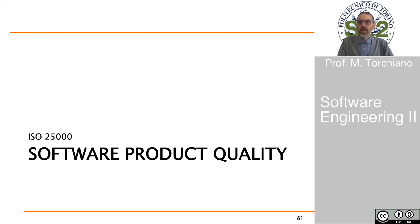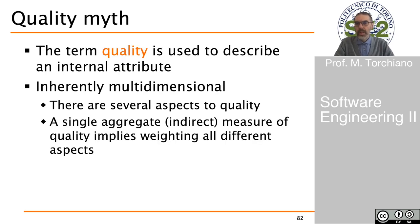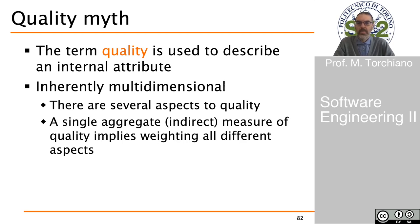Let's talk about software product quality, in particular with reference to the ISO 25000 standard family. In general, when we talk about quality we want to describe an attribute of software. It is difficult to characterize and it is inherently multi-dimensional — there are several aspects in quality, so a simple individual measure of quality is fairly impossible and it must combine several different perspectives.